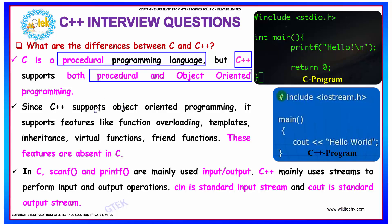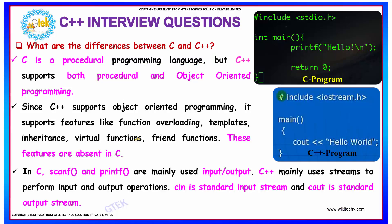Since C++ supports object-oriented programming, it supports features like function overloading, templates, inheritance, virtual functions, and friend functions. These features are absent in C.